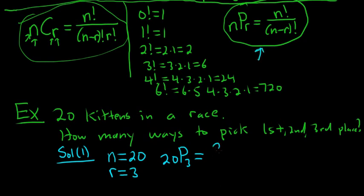It would be 20 factorial over, n is 20, 20 minus 3 factorial. And again, if you have software for this and you know how to use it, use the software. This is just doing it by hand just to show you. 20 factorial over, now 20 minus 3, that's 17.